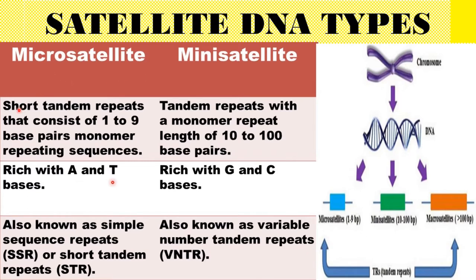Microsatellite consists of a short tandem repeat, whereas minisatellite consists of a tandem repeat. In the case of a short tandem repeat, it consists of a one to nine base pair monomer repeating sequence, whereas the tandem repeat has a monomer repeat length of 10 to 100 base pair. Microsatellite is rich in adenine and thymine base pairs, whereas minisatellite is rich in guanine and cytosine.